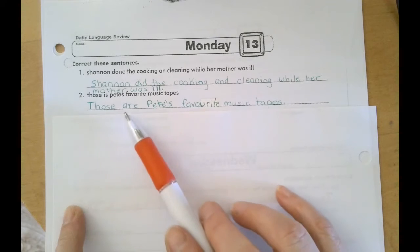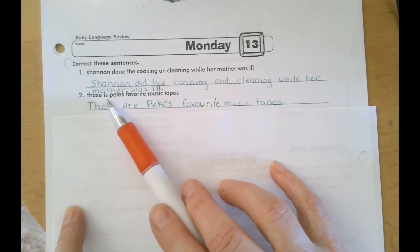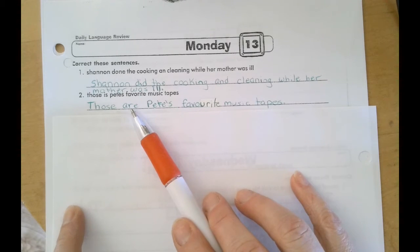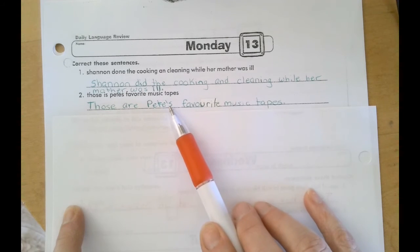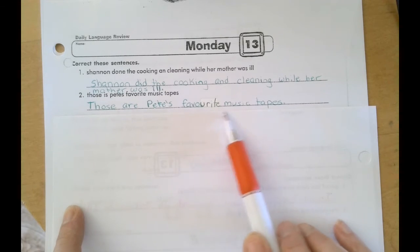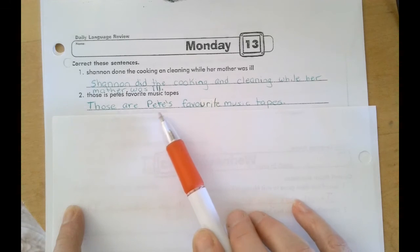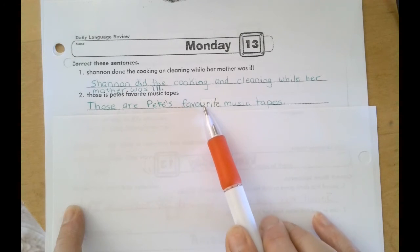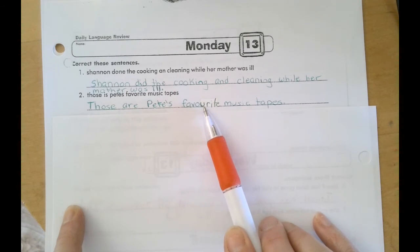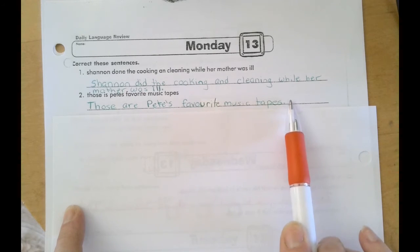Number two, those with a capital T, these instead of is because it's plural. Pete with a capital and an apostrophe to show possession because those tapes belong to Pete. Favorite with a U in it for the Canadian spelling and a period at the end.